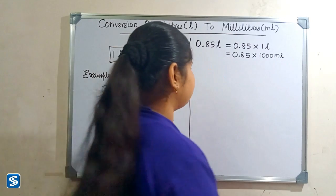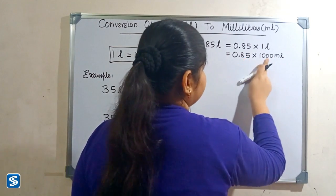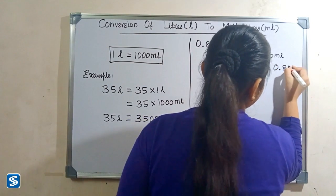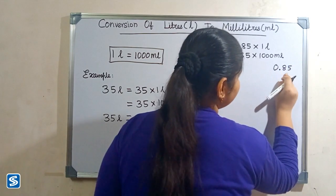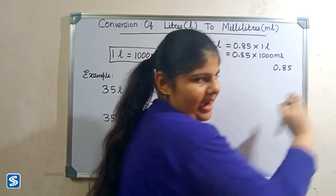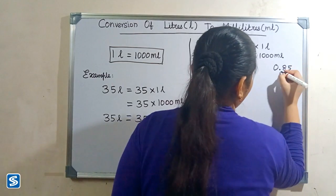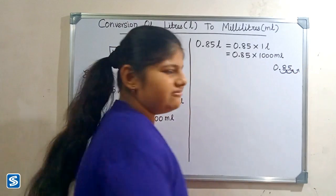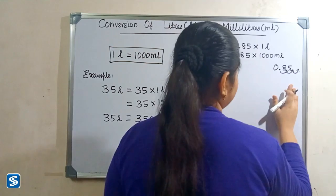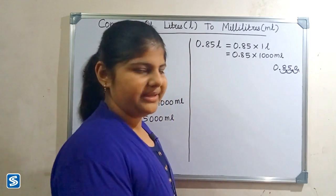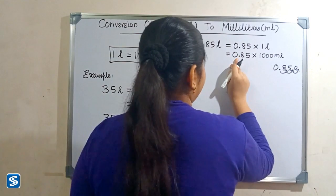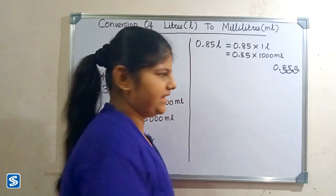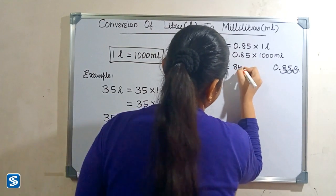The easy way to multiply a decimal number with one thousand is to move the decimal point three places to the right. So one, two, three — now we have to fill zeros in the empty spaces. When we multiply 0.85 by one thousand milliliters, our answer will be 850 milliliters.